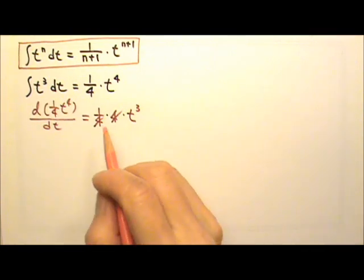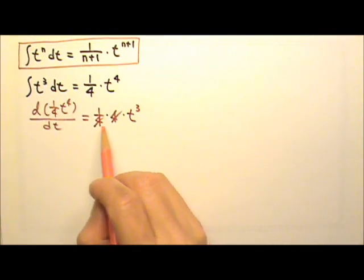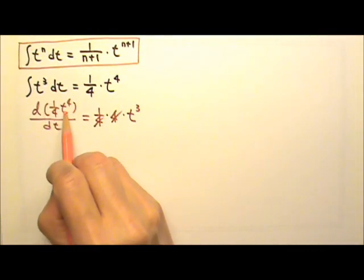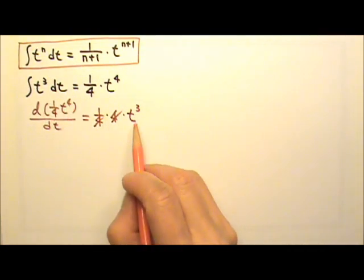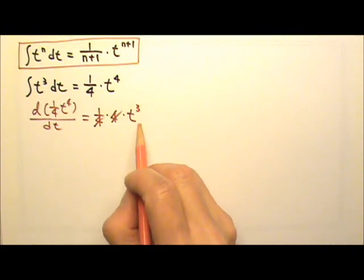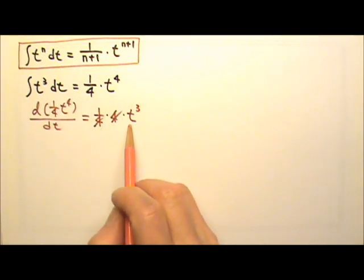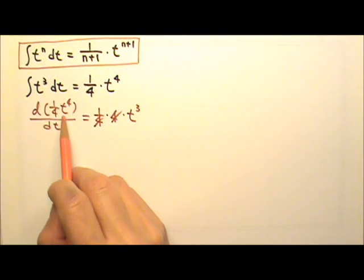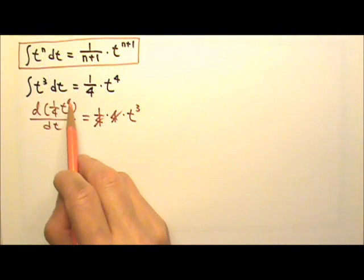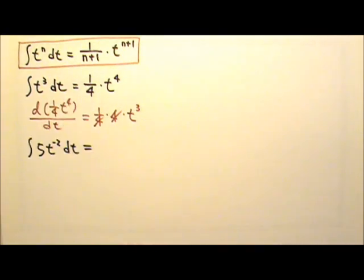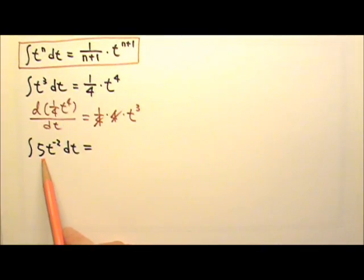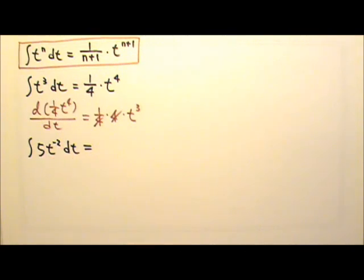This way, when we take the derivative of one-fourth t to the fourth, we will get t to the third. Which means if we integrate t to the third, we should get one-fourth times t to the fourth. Now let's try the integral of five times t to the negative two dt.